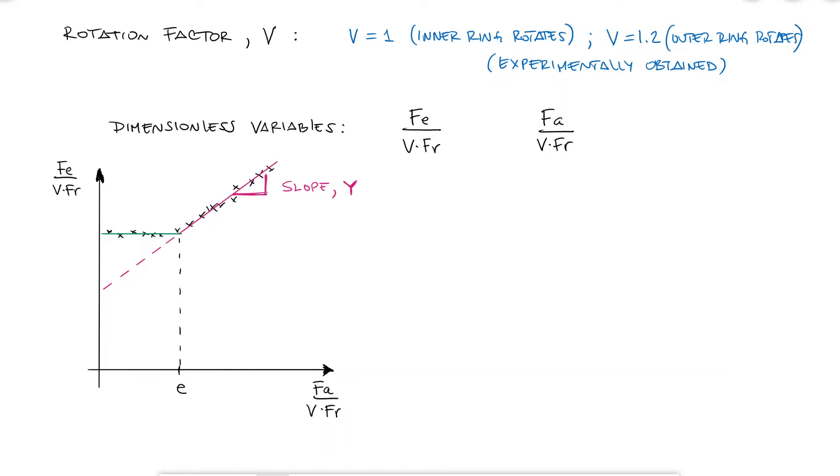Therefore, Fe over V times FR is just 1 for values of X less or equal to E, and Fe over V times FR equals the equation of a straight line for values of X greater or equal to E. In this case, Y is the slope.